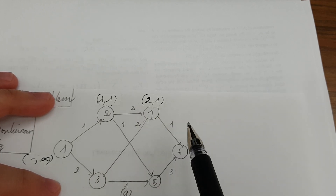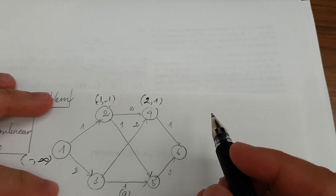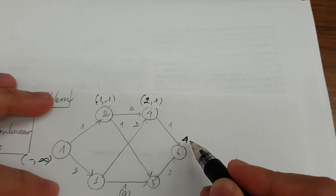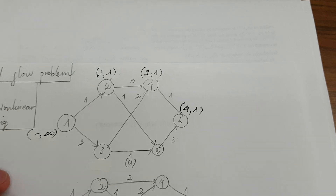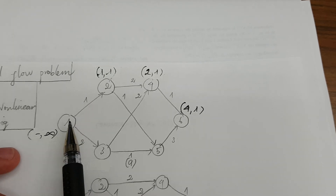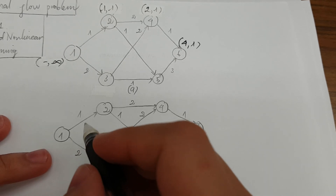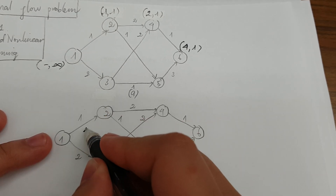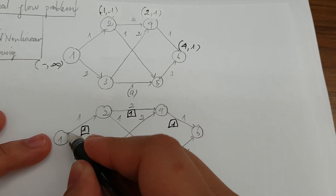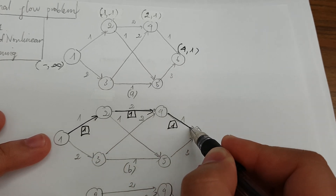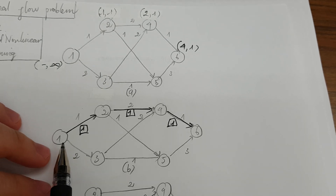From node 4 we continue scanning. There is only node 6, which is the sink, so we label it as (4, 1). Now we have one path from source to sink. We keep this path — the flow is 1. Then we continue the process and scan again from node 1.